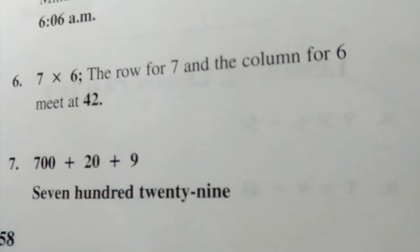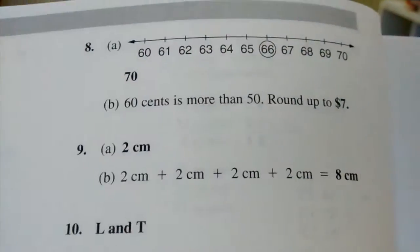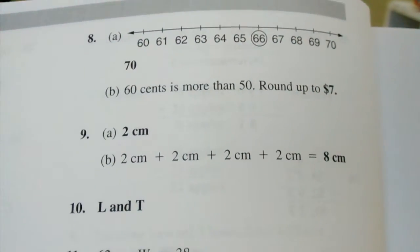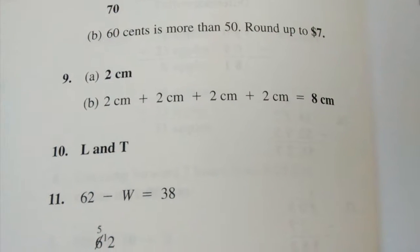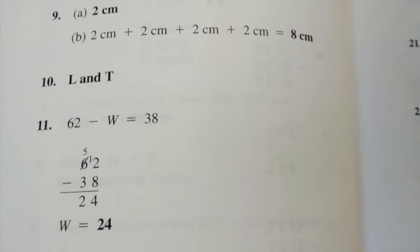700 plus 20 plus 9, 729. Number 8, A, 70, B, $7. Number 9, A, 2 centimeters, B, 8 centimeters.